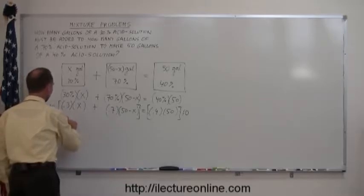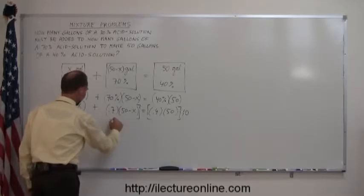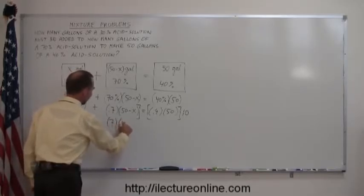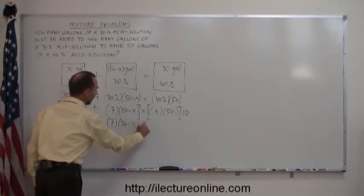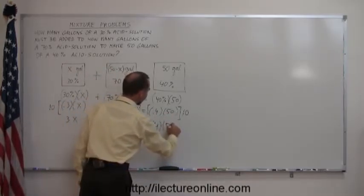So, 10 times 0.3 is 3, so we have 3x plus 10 times 0.7 is 7, multiply that times 50 minus x, and 10 times 0.4 is 4 times 50. Okay, now we just simply go ahead and get rid of the parentheses.